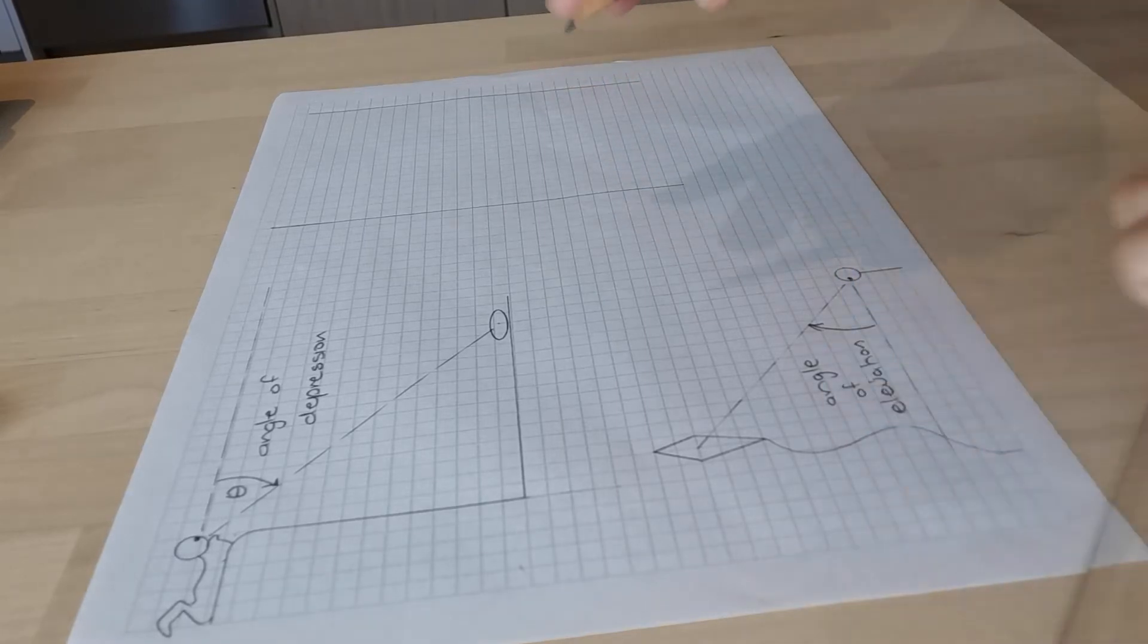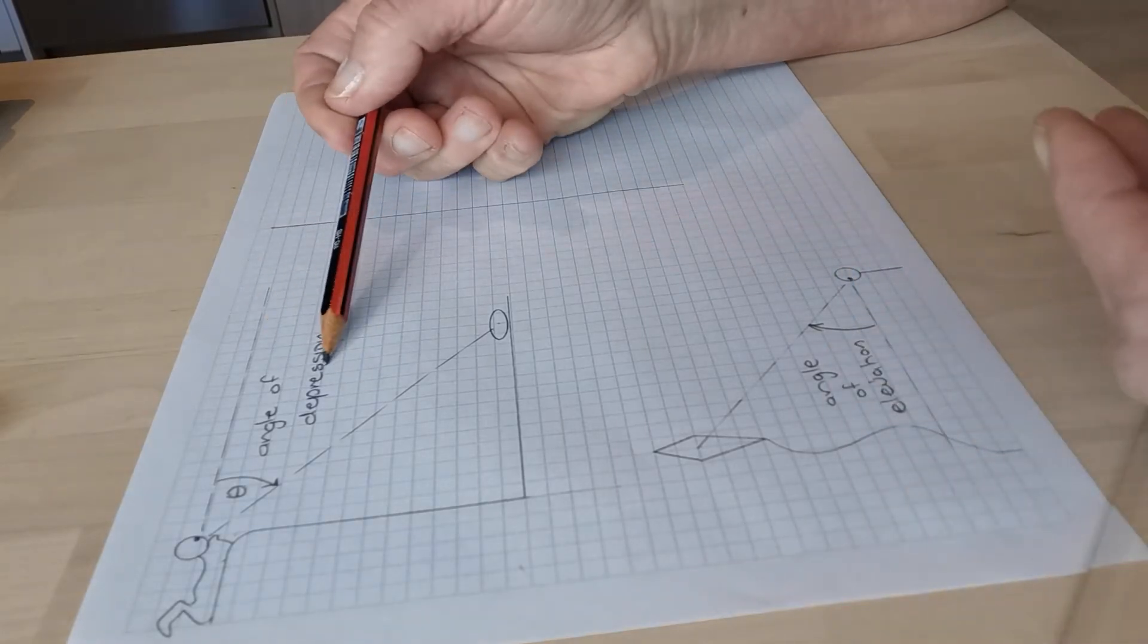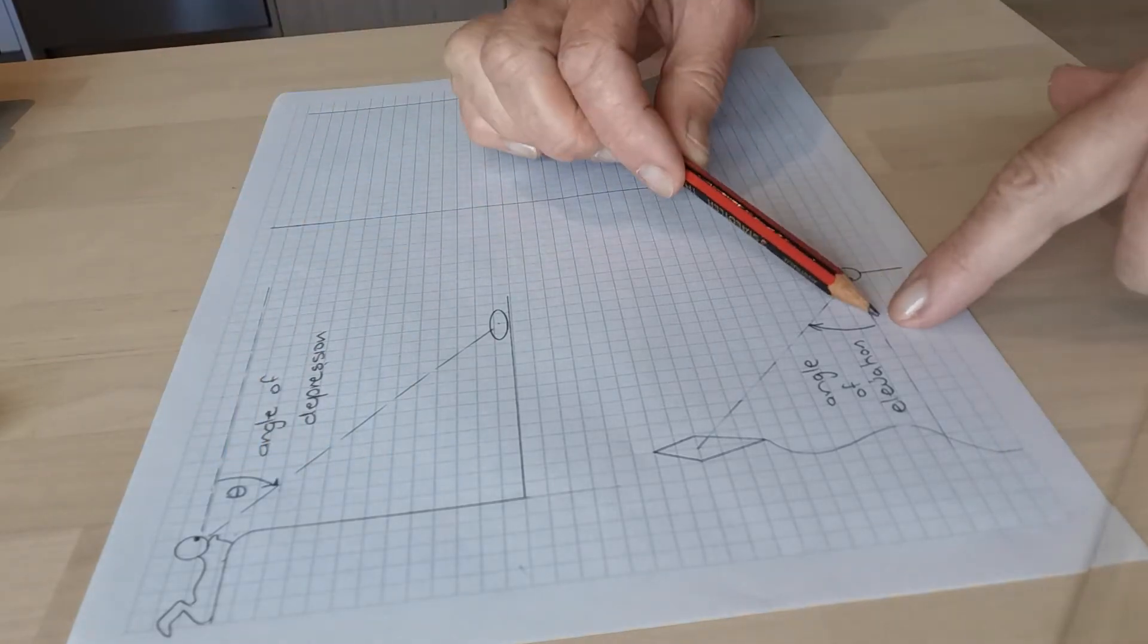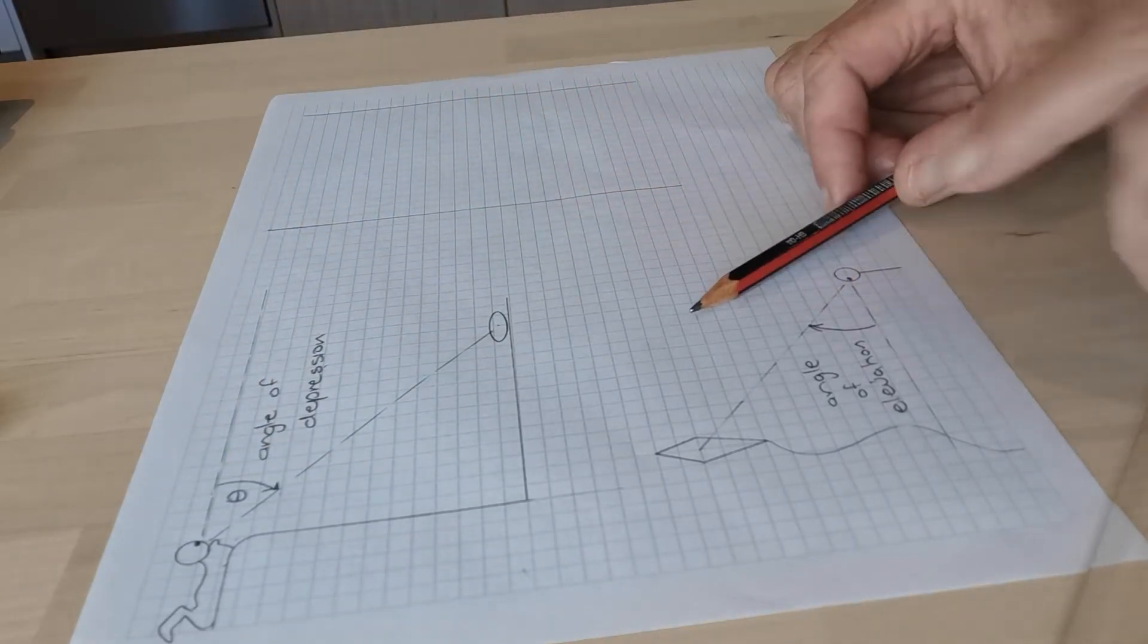Okay, so the angle of depression is measured down from the horizontal and the angle of elevation is measured up from the horizontal.